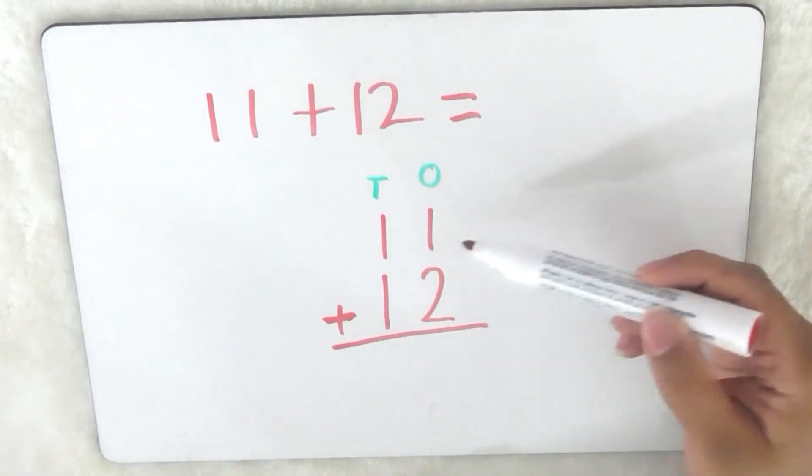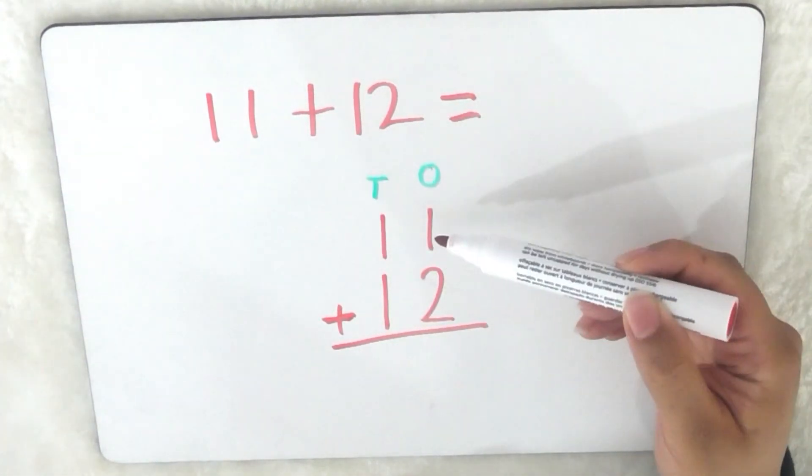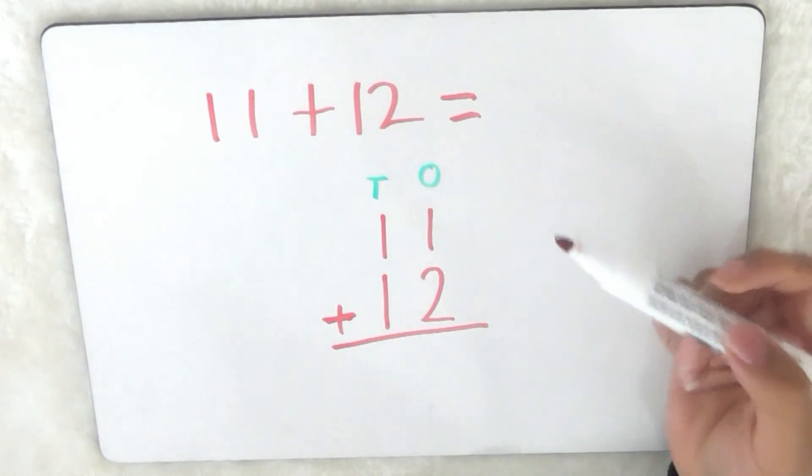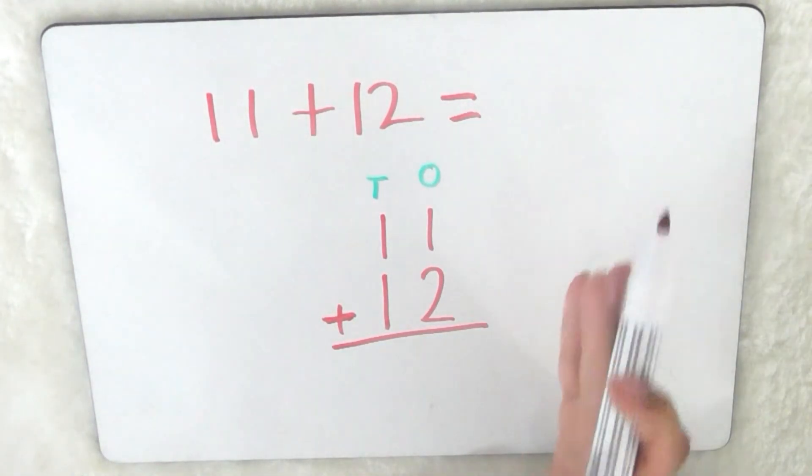So we don't add it across like we do here, we add it going down. So first we start with the ones, so we always start from the right hand side.